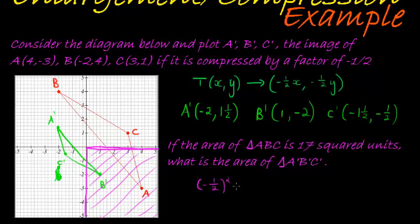So we have to square that multiplied by the 17 squared units, and that gives me, negative one-half squared is a quarter, and so the area is 17 divided by 4, which I think is 4 and a quarter. Yeah, which is equal to 4.25 squared units.